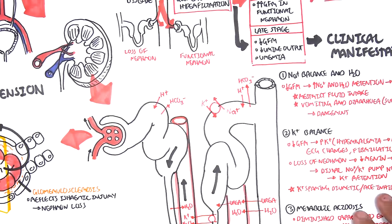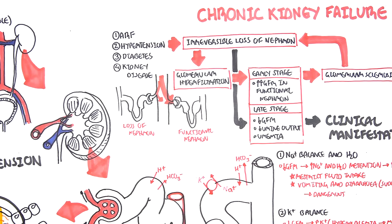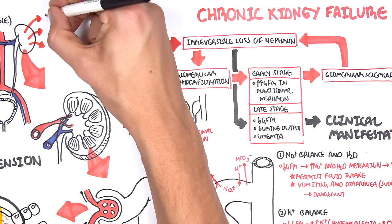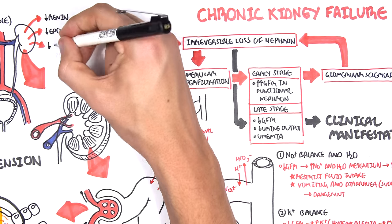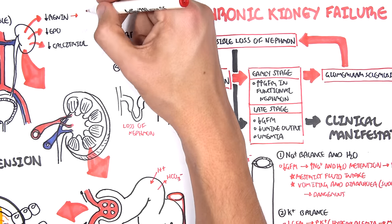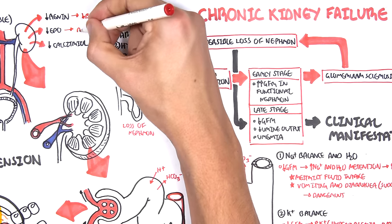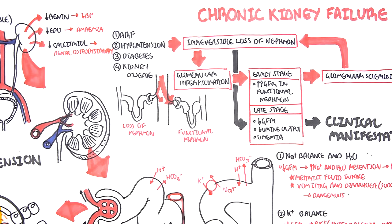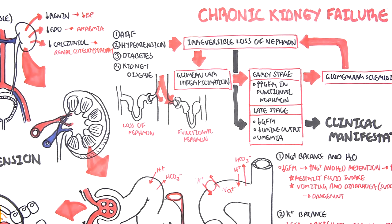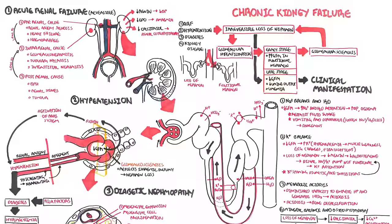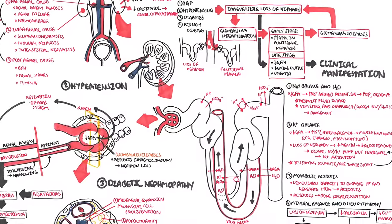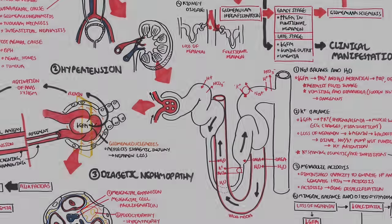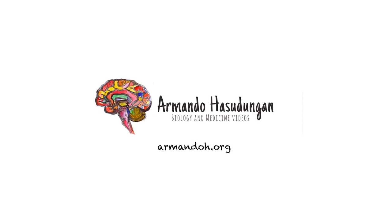In late chronic kidney disease, when many nephrons are lost, there is eventually a decrease in renin production resulting in decreased blood pressure, a decrease in erythropoietin resulting in anemia, and a decrease in the production of calcitriol causing renal osteodystrophy. In this video we covered chronic kidney failure, its causes — including acute renal failure, hypertension, diabetes, and polycystic kidney disease — and its clinical manifestations. Thank you for watching.